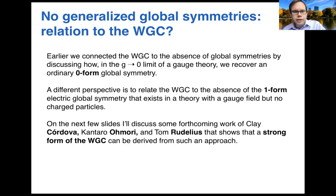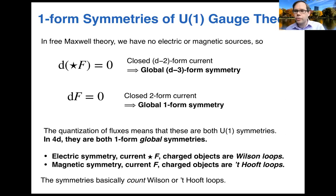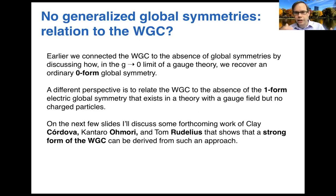A U(1) gauge theory with no charged objects has a new global symmetry. But quantum gravity doesn't like global symmetries — so how does quantum gravity get rid of these symmetries that would be there if I just had a photon? It gets rid of them by adding things to the right-hand side of these equations so that the conservation laws are not true anymore. If there are charged electric objects, ★F is not conserved. If there are magnetic monopoles, F is not conserved. So if we have electrically and magnetically charged particles, we don't have these global symmetries — we haven't violated the no-global-symmetry statement. That tells us we expect quantum gravity to have these charged objects, but that's still a pretty minimal statement; we want something stronger.